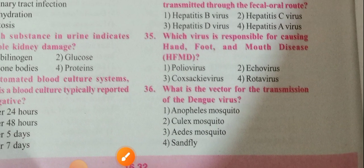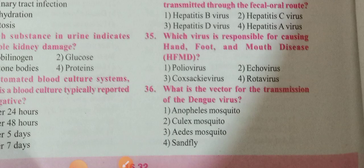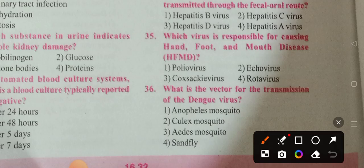Question 35: Which virus is responsible for causing hand, foot, and mouth disease? Option 3 — Coxsackievirus. Question 36: What is the vector for the transmission of the Dengue virus? Option 3 — Aedes mosquito. That's all for today. Take care, bye, have a nice day. See you in the next video.